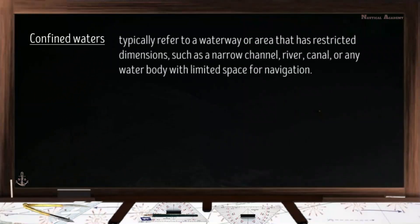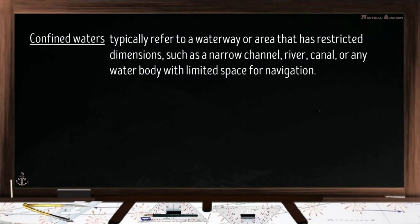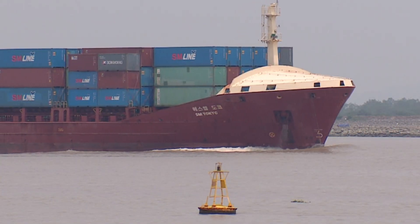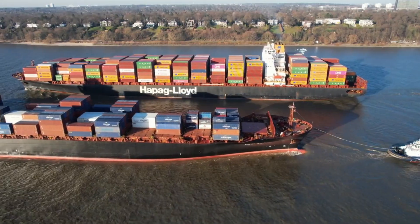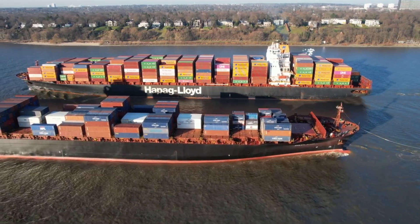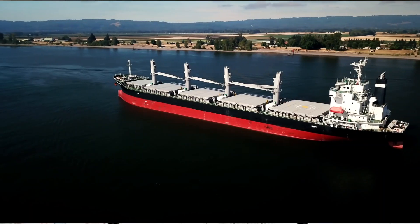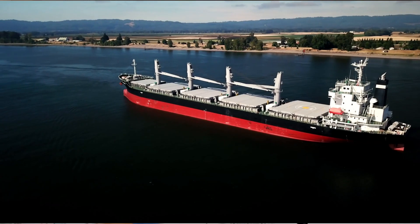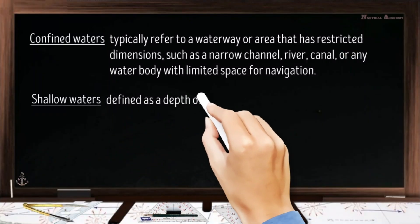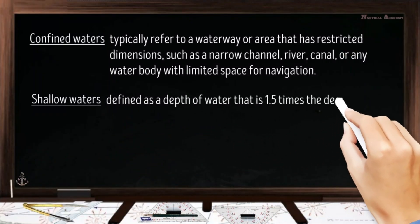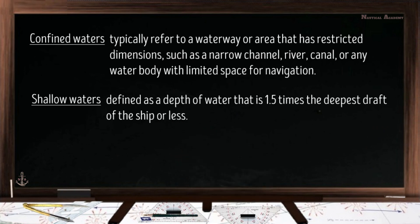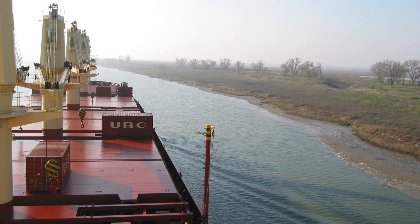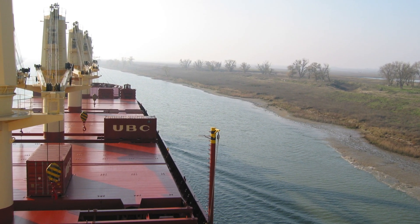Confined waters typically refer to a waterway or area that has restricted dimensions, such as a narrow channel, river, canal, or any water body with limited space for navigation. There is no exact measurement for shallow water, but it is defined as a depth of water that is 1.5 times the deepest draft of the ship or less. So the term shallow water depends on the ship's draft.